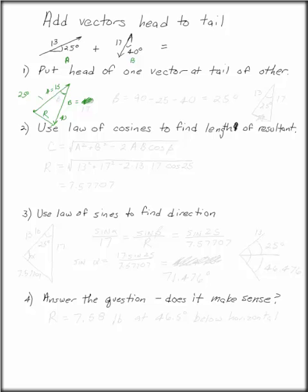I said it wrong. B is 17. This angle in between here, call it beta. Beta is going to be 90 minus 25 minus 40, which is 25 degrees. So this angle in between is 25 degrees.